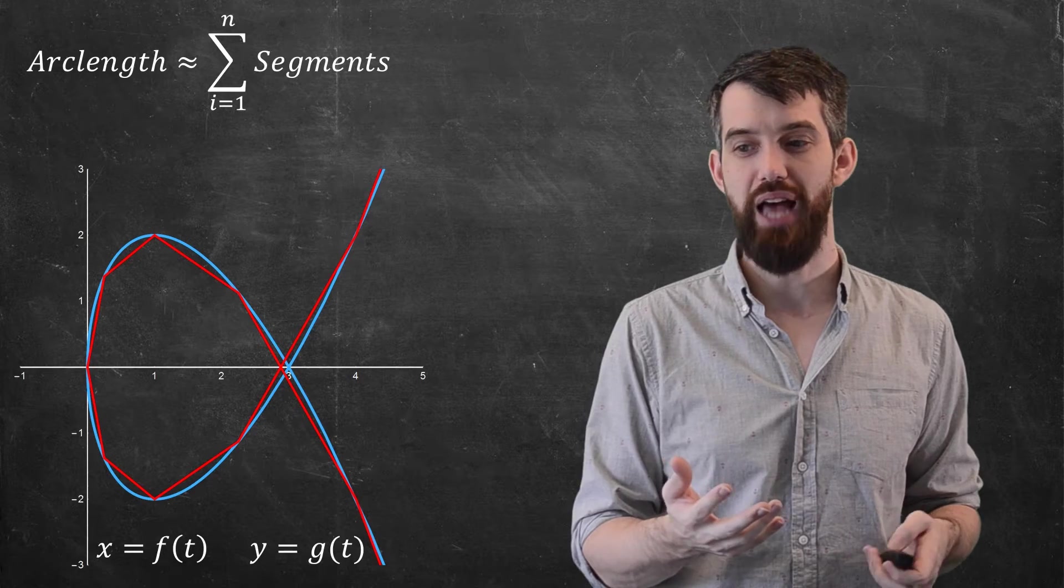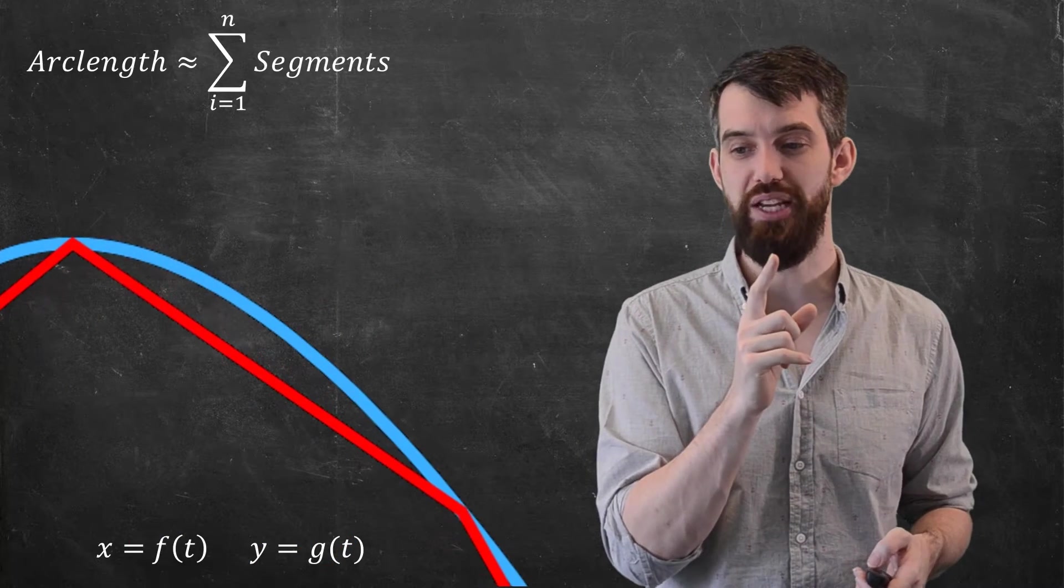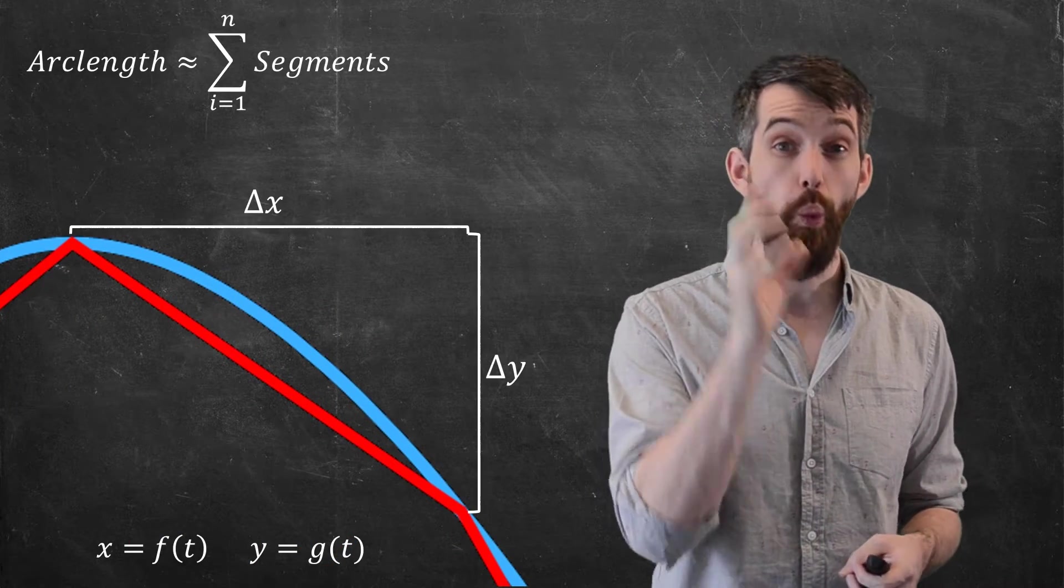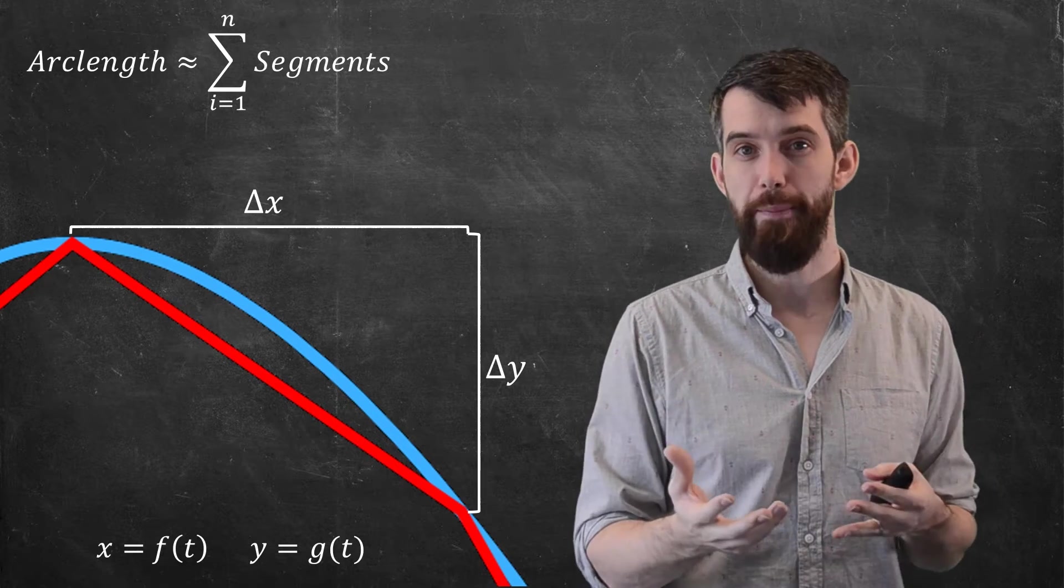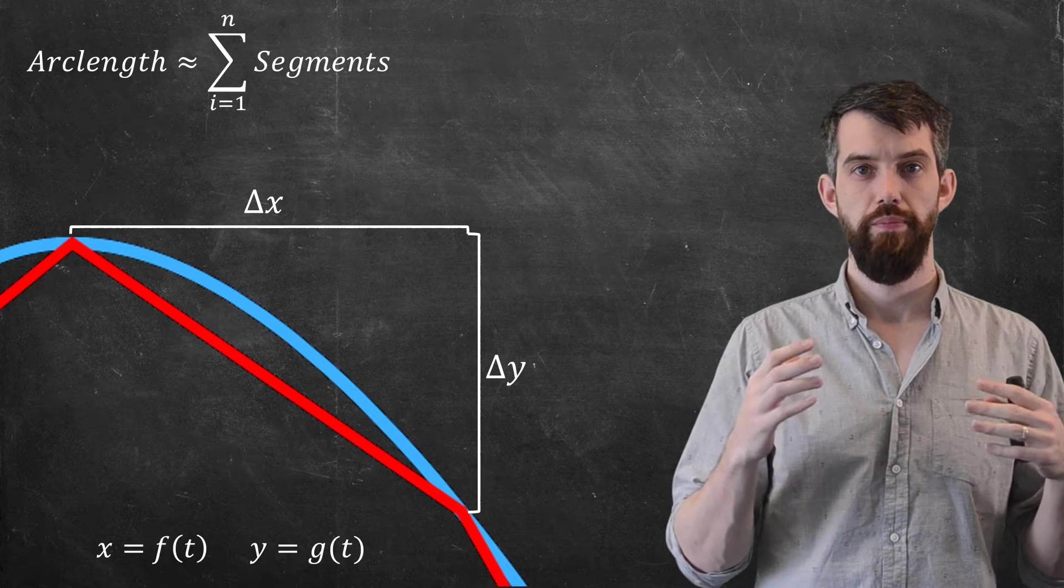So first thing I want to do is I want to zoom in on one particular region here. So let's just talk about one little region of arc length. I've got a change in x, and I've got a change in y.